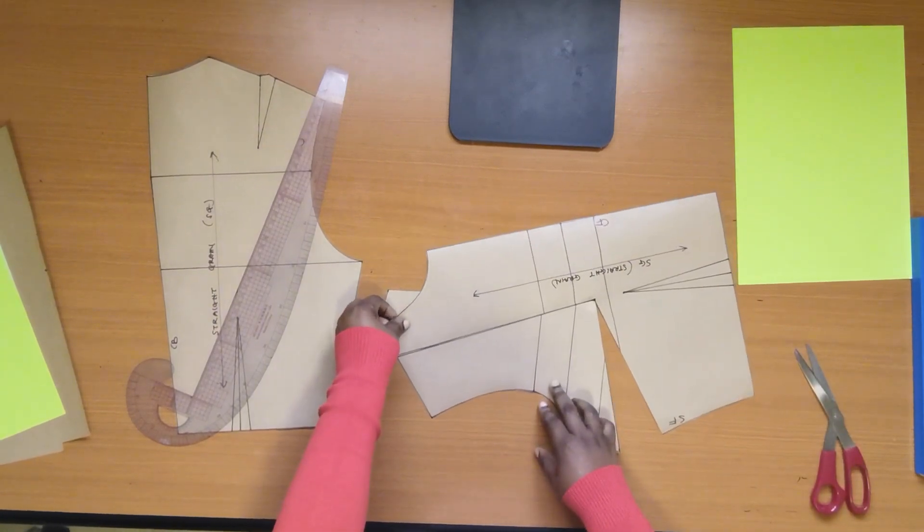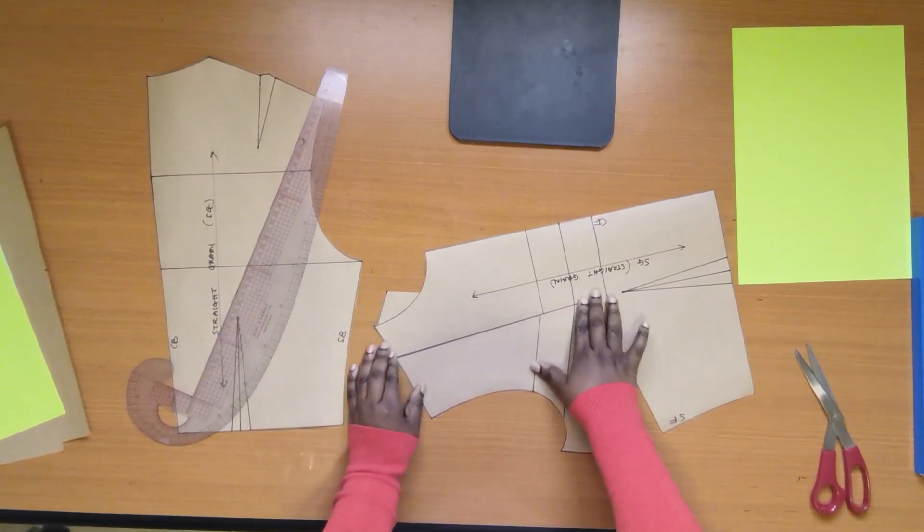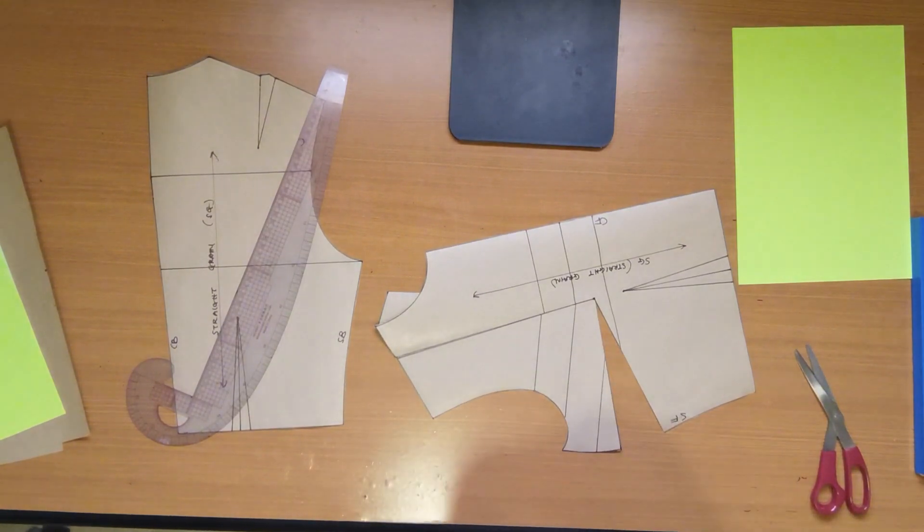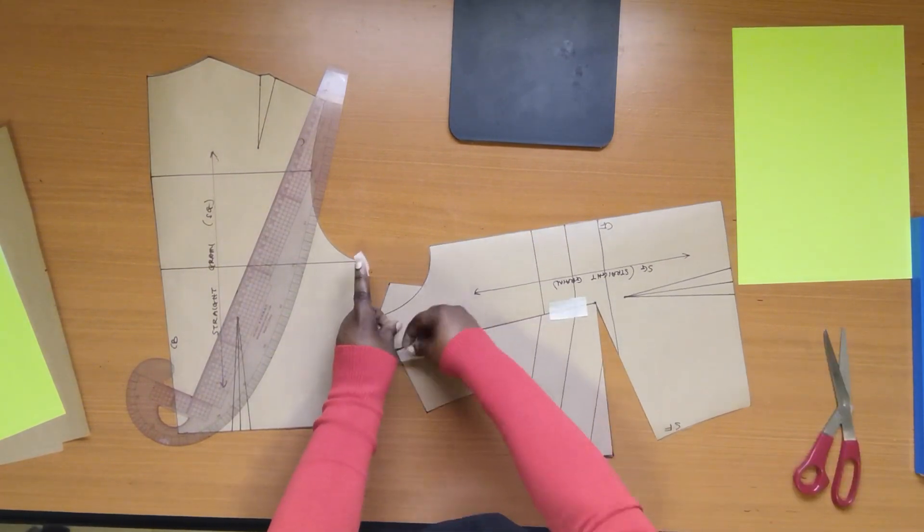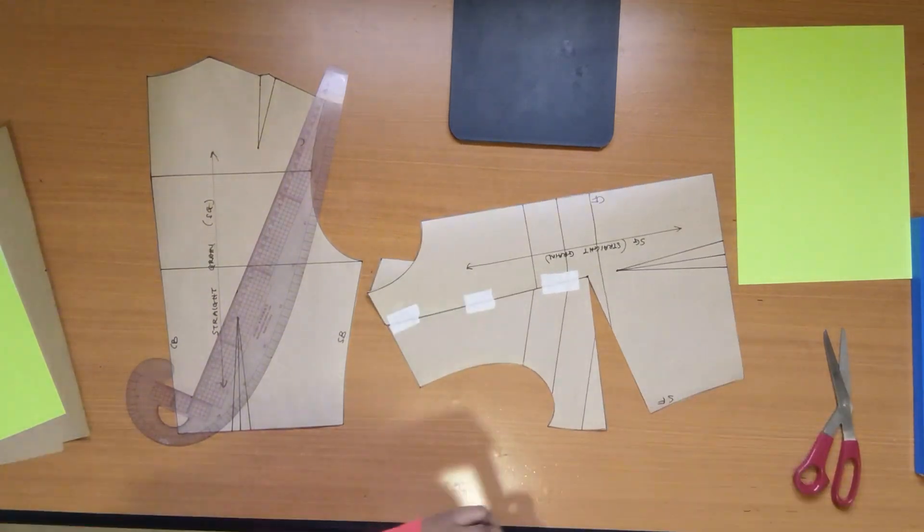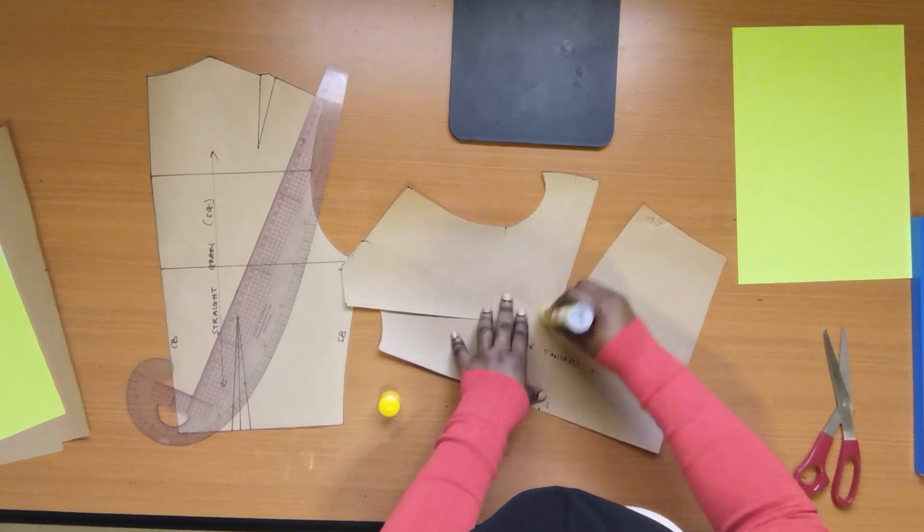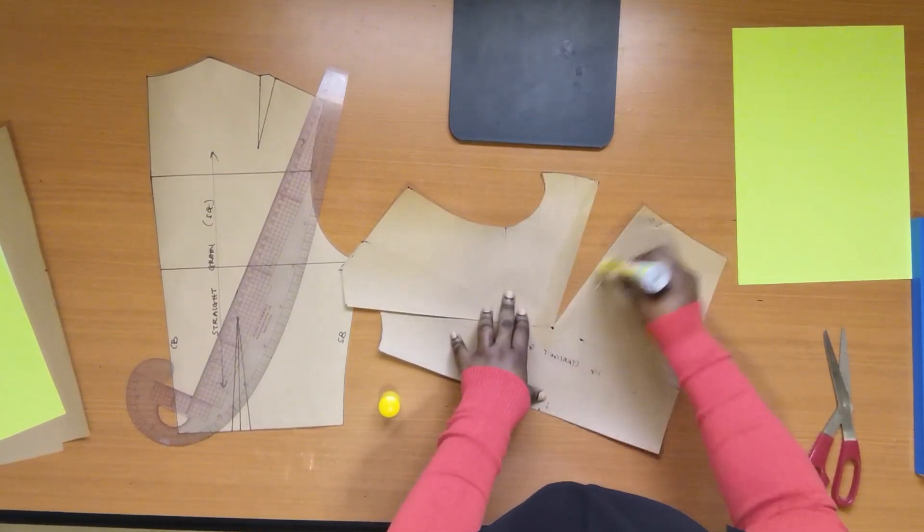Pin the shoulder dart and secure with tapes. The shoulder dart has been successfully moved to the underarm point. You can go on to place a paper underneath the new dart position.